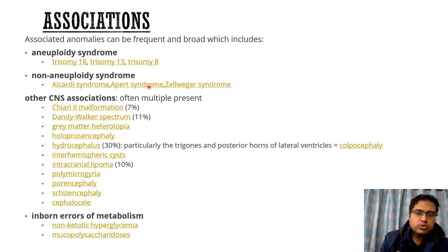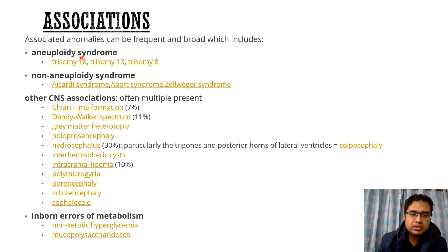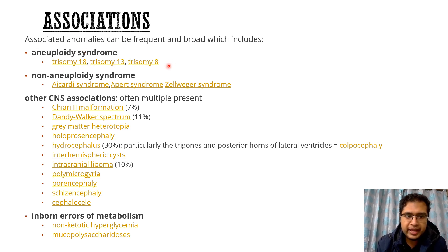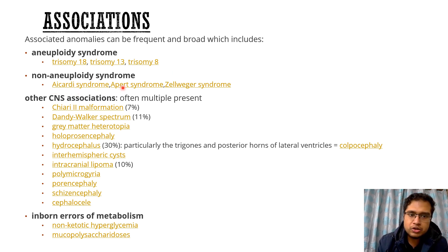Coming to the associations of dysgenesis of the corpus callosum: corpus callosum agenesis or dysgenesis can be associated with a lot of syndromes. Important aneuploidy syndromes to remember are trisomy 18, trisomy 13, and trisomy 8. Non-aneuploidy syndromes include Aicardi syndrome, Apert syndrome, and Zellweger syndrome.